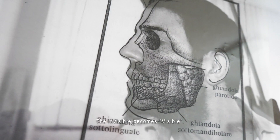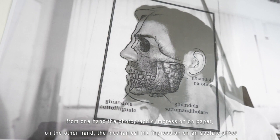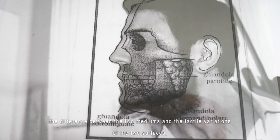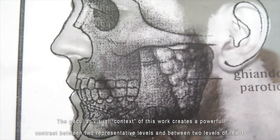From one hand, the photographic impression on paper, and on the other hand, the mechanical ink impression on an acetate film. The difference between the two mediums and the tactile variation of the two surfaces creates a continuous short circuit.